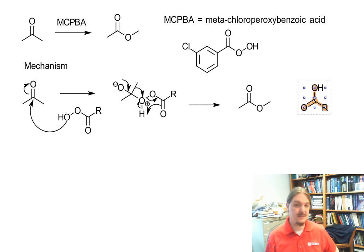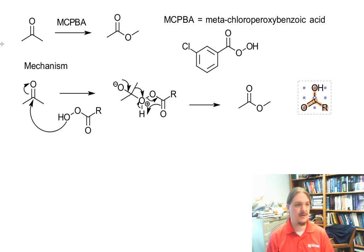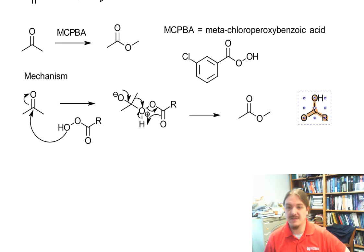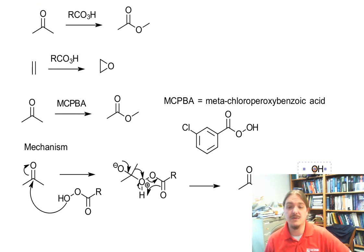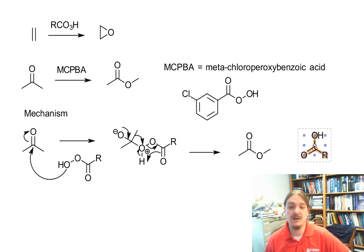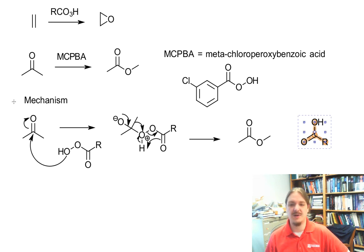Here is the mechanism. If this were done in base, we wouldn't have the extra proton transfer step, but otherwise it would be really similar. This is the mechanism of the Baeyer-Villiger oxidation. In the next video, we'll talk about what happens if the molecule is not symmetric, because there are different kinds of products that might form. Thank you for watching.